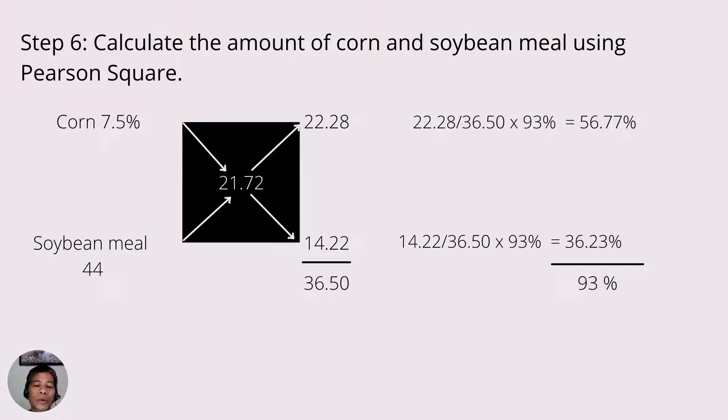Because we are only getting the ratio of corn and soya from the remaining 93%. So we multiply it with 93%, and the resulting product is 56.77% for corn and 36.23% for soybean meal.